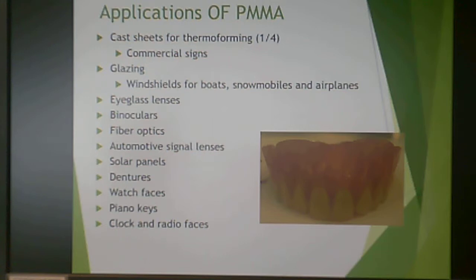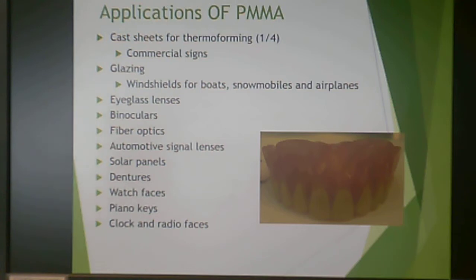Polymethylmethacrylate is used a lot for cast sheets for thermoforming — often for commercial signs, since you retain colors and it can be used for external purposes and is very easily thermoformed. It's also used in glazing applications, meaning any application in which glass would typically be used. Specifically, it is used for windshields for boats, snowmobiles, and airplanes. It is used instead of polystyrene because it has better impact resistance, and boats, snowmobiles, and airplanes are typically outside.